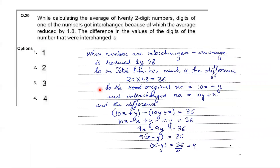Here it is written that while calculating the average of 22 two-digit numbers, one of the digits of one number got interchanged, because of which the average reduced by 1.8. We have to find the difference in the values of the digits that were interchanged. Since the average is reduced by 1.8 across 22 numbers, the total sum decreased by 1.8 × 20 = 36.